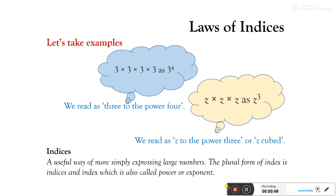The plural form of index is known as indices. Index is also called power or exponent. Let us take an example. The first: 3 multiplied 4 times is read as 3 to the power 4. That means the compact form of 3 × 3 × 3 × 3 is 3 to the power 4. Similarly, the compact form of z multiplied 3 times is z cube, or z to the power 3.